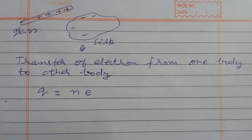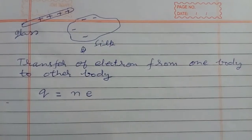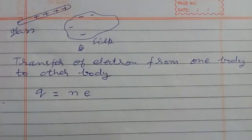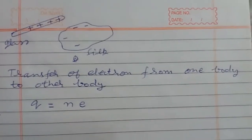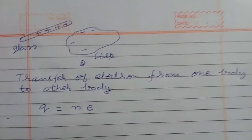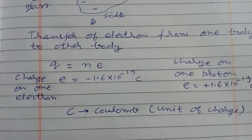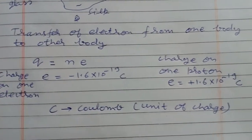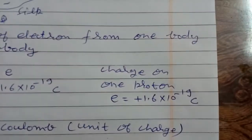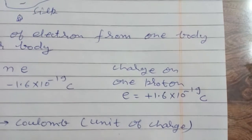Now when a body gains some electrons, then that body becomes negatively charged. Suppose n electrons are transferred from one body to another body. Then charge acquired by the body which loses electrons, q is equal to n into small e, where small e is charge of one electron. Charge on one electron e is equal to minus 1.6 into 10 to the power minus 19 C. C stands for Coulomb, which is unit of charge. Then charge on one proton e is equal to plus 1.6 into 10 to the power minus 19 C.